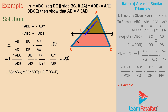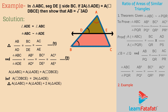Now, area of triangle ABC is equal to area of triangle ADE plus area of quadrilateral DBCE. But area of quadrilateral DBCE is equal to 2 into area of triangle ADE, which is given. Therefore, area of triangle ABC is equal to area of triangle ADE plus 2 into area of triangle ADE. Therefore, area of triangle ABC is equal to 3 into area of triangle ADE. Therefore, area of triangle ABC divided by area of triangle ADE is equal to 3 divided by 1.